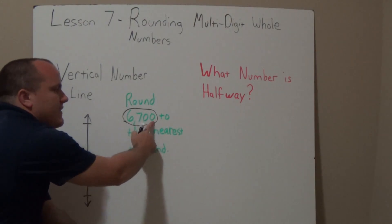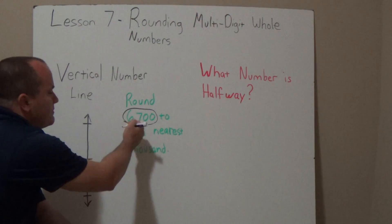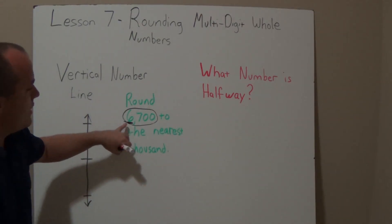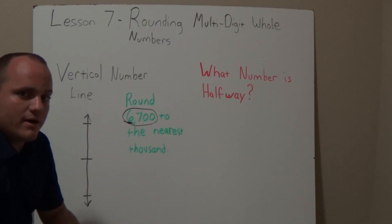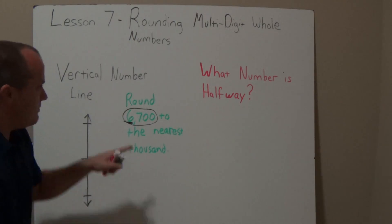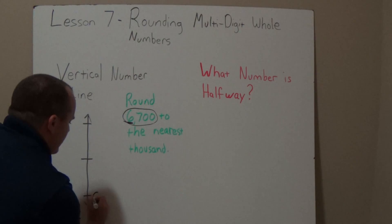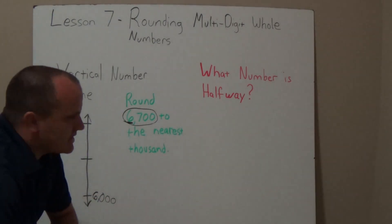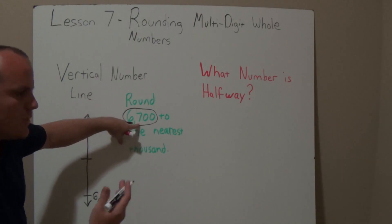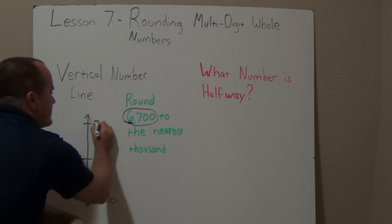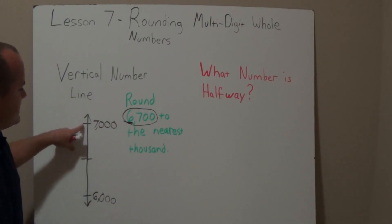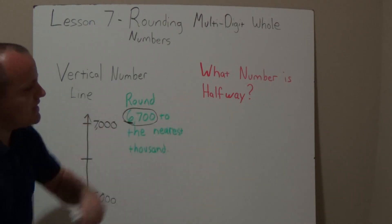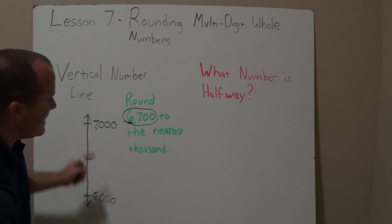If I remember from place value, there's the ones, tens, hundreds, and thousands place. I'm going to underline the digit I'm rounding to — the thousands place. With my number being 6,700, I need to think about what numbers it can be close to. It can either be close to 6,000, which I'll put at the bottom, or the next thousand, which would be 7,000, at the top.